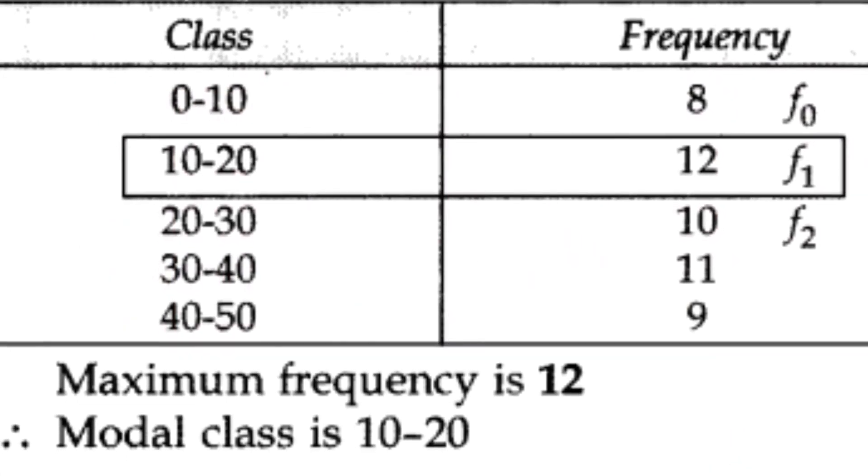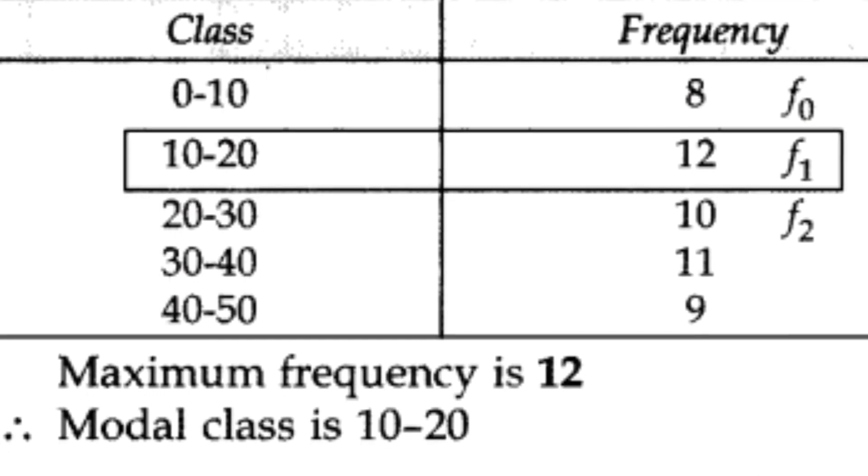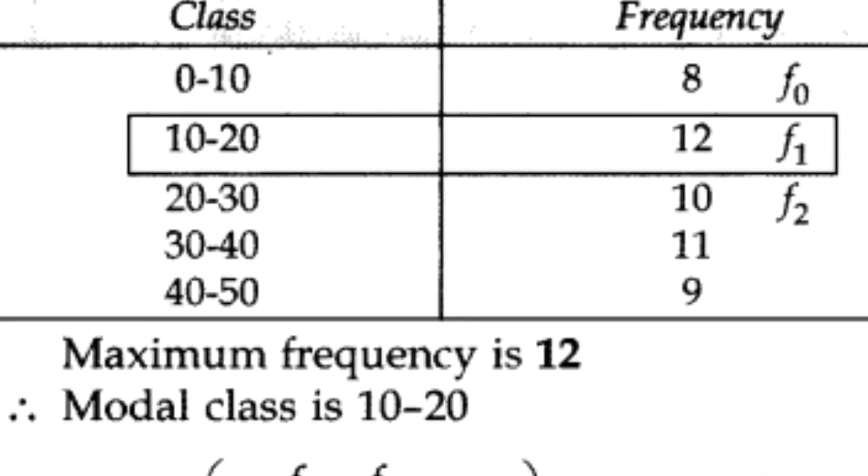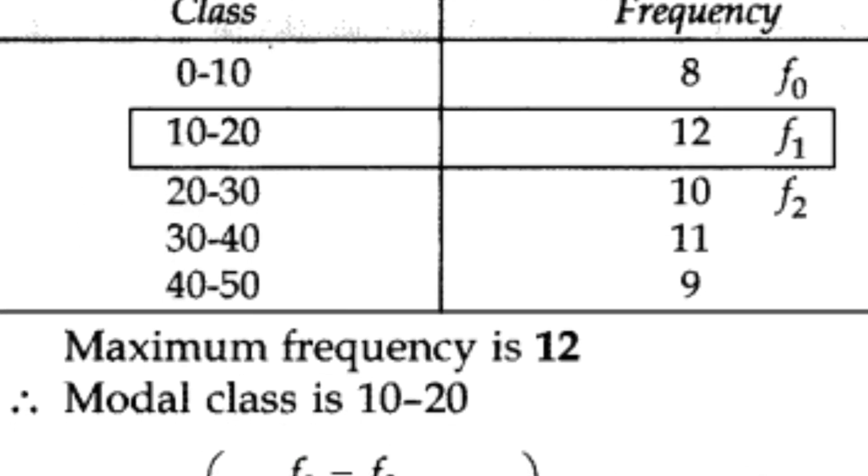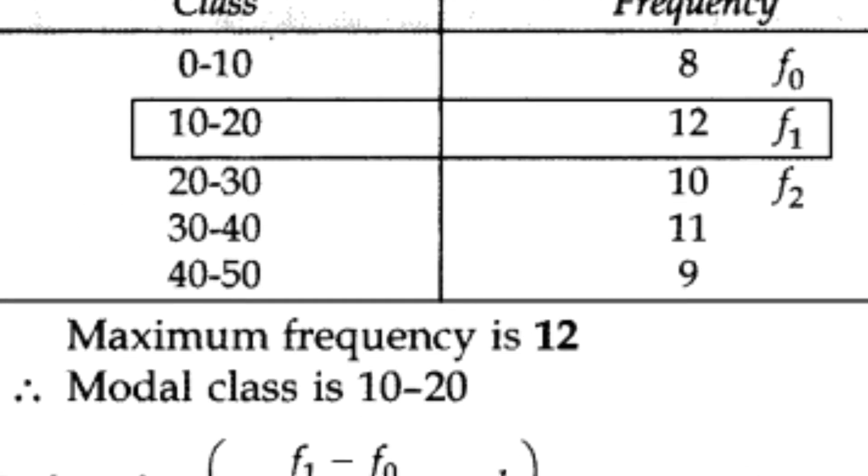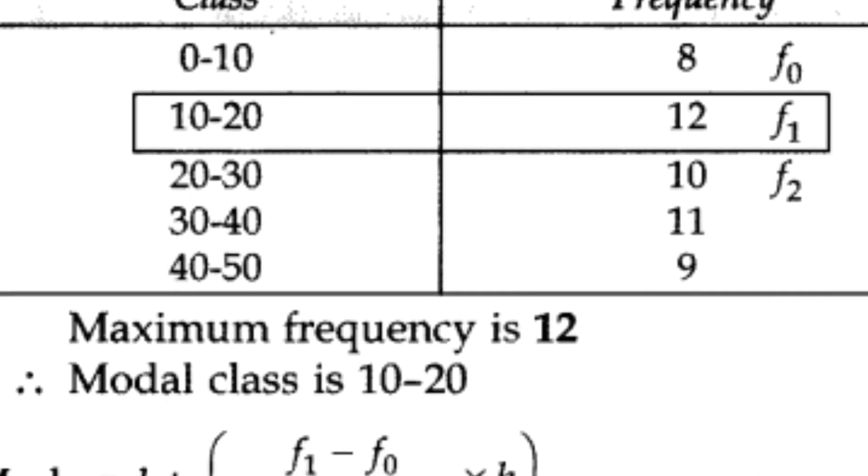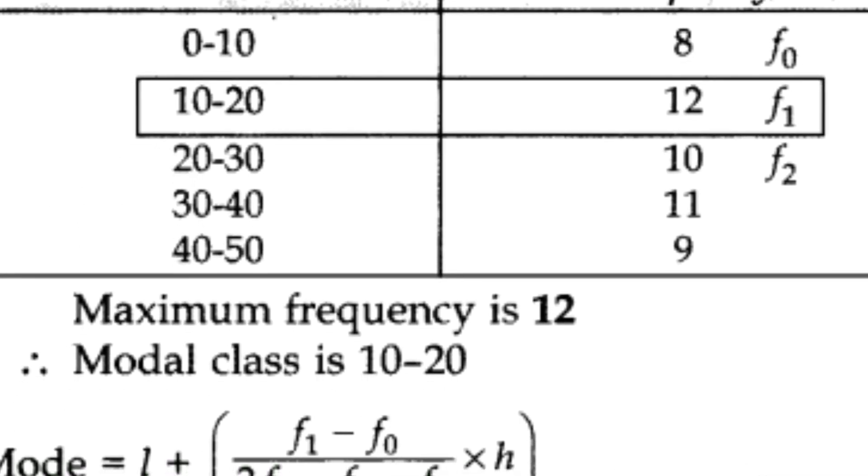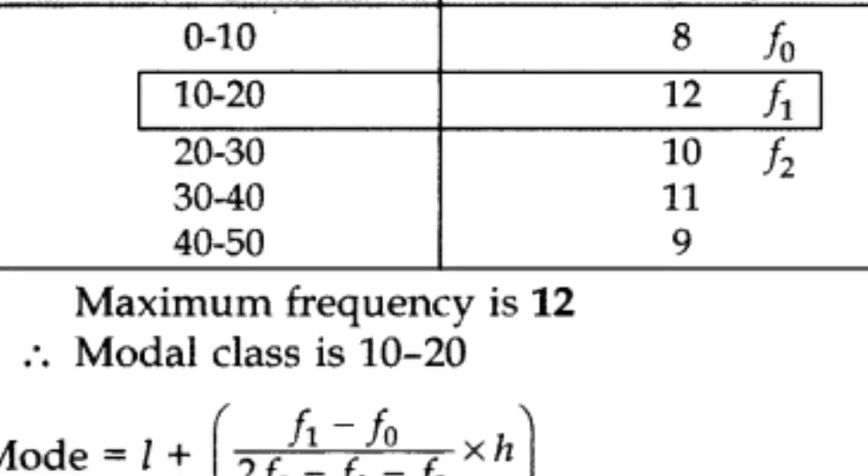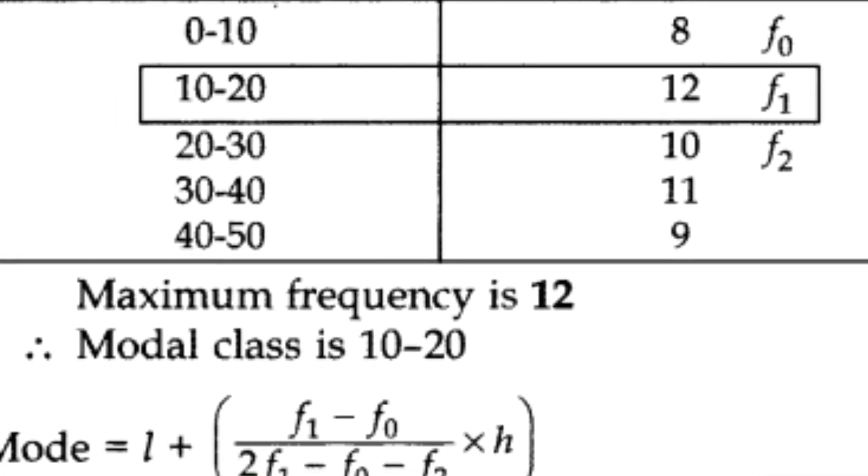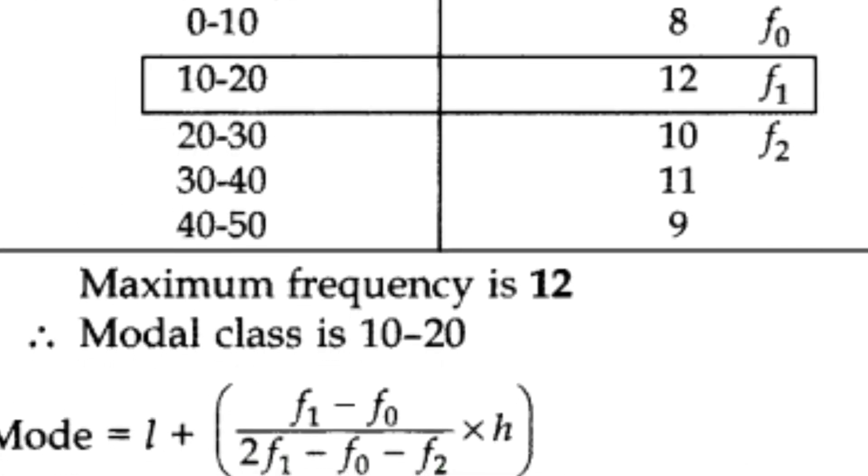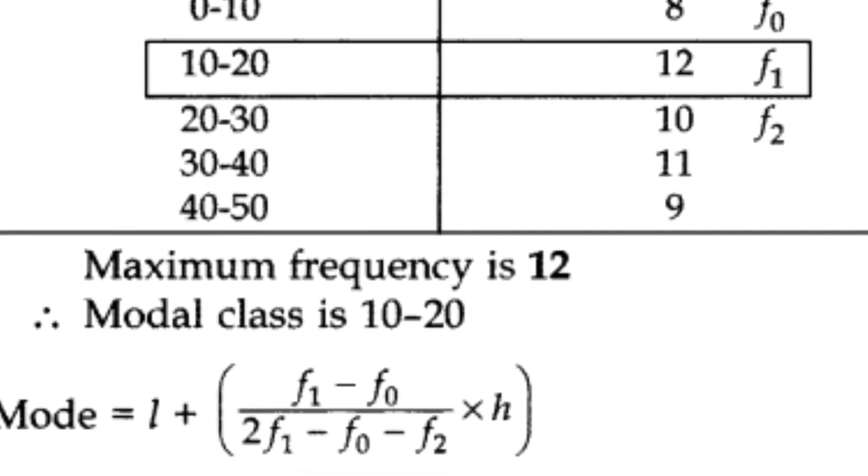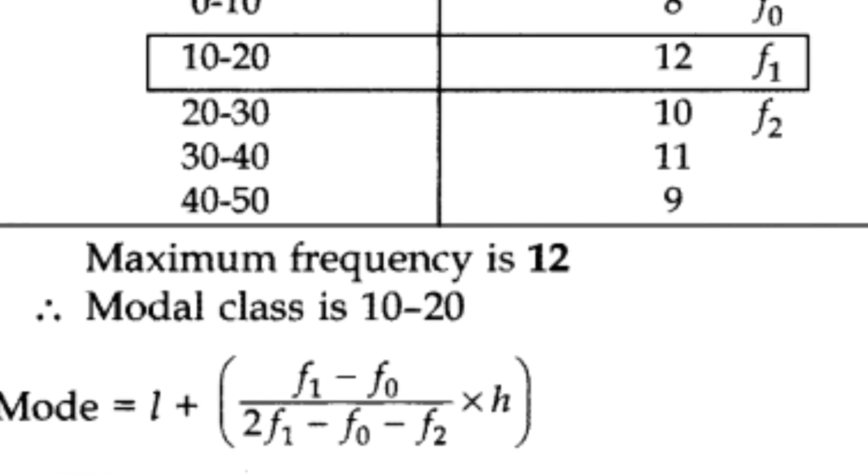In the above, the class variable is 10 and the highest frequency, as you can see, is 12. So we take the column of 10 to 20. The highest frequency 12 is termed as f1. The frequency just above 12, that is 8, is termed as f0, and the frequency which is just below the highest frequency is termed as f2.